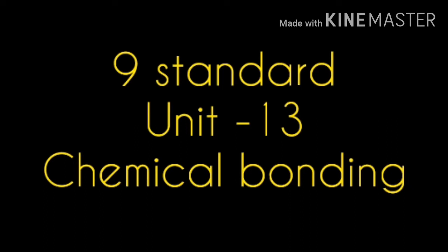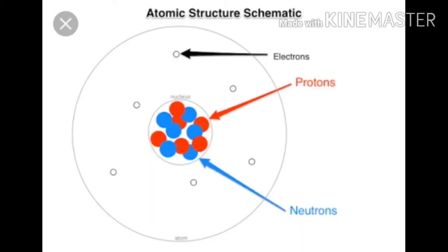What do you mean by chemical bonding? Before that, a chemical bond exists between the atoms. So let us know what is an atom and what are the subatomic particles present inside the atoms. Atom is the smallest particle that takes part in a chemical reaction. It is a very tiny and minute substance present in an object.